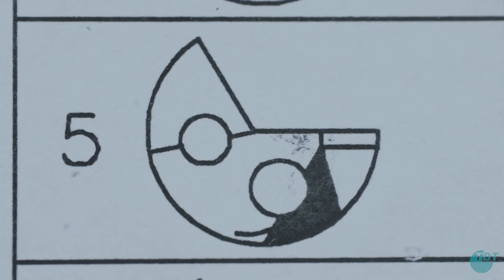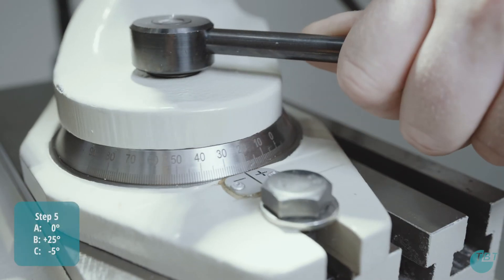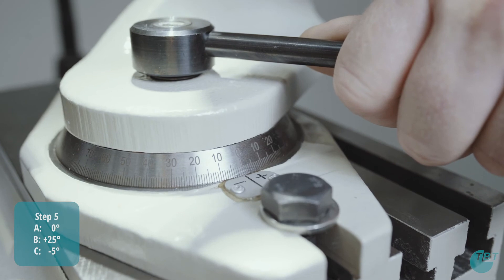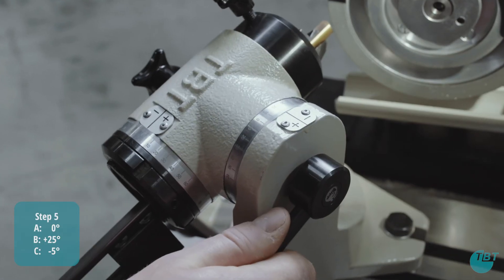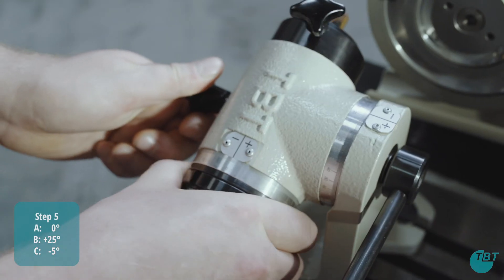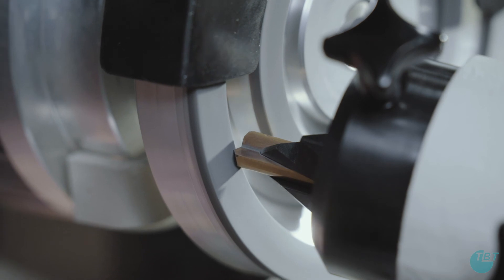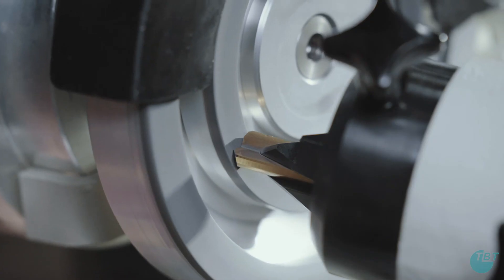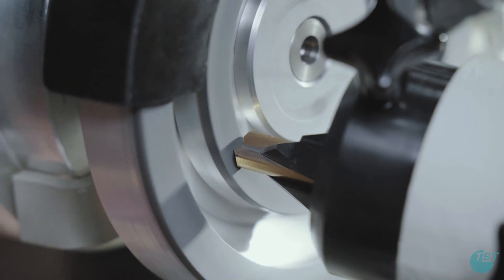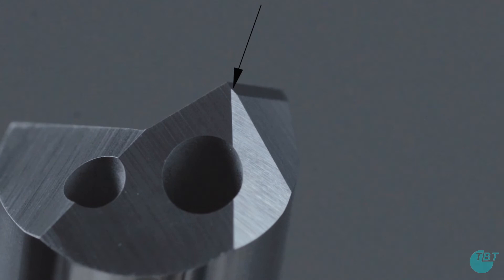Now set the axis to grind the drill point relief. Set the A axis to 0 degrees, the B axis to plus 25 degrees and the C axis to minus 5 degrees. The surface of the drill point relief should end in the middle of the outer cutting edge.